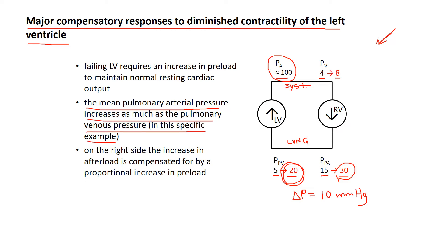What does that mean for the right ventricle? The afterload has now been doubled. How can an otherwise unaffected right ventricle maintain its output in the face of a doubled afterload? By increasing its preload — if you suddenly increase afterload, transiently the pressure at the inlet builds up until the increased preload compensates, wholly or partly, for the increased afterload. Here I've made the simplifying assumption that the compensation is perfect: doubling of the preload compensates exactly for a doubling of the afterload.